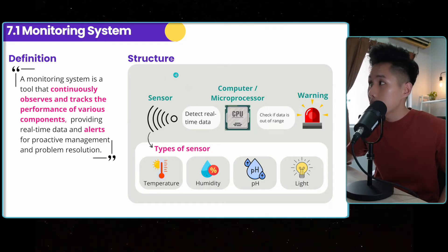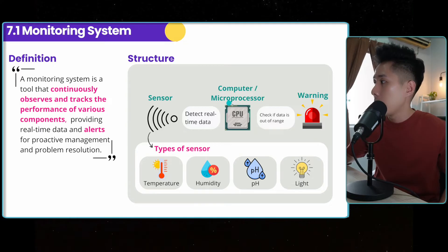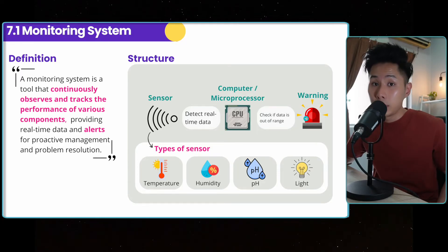And this is the structure of a monitoring system. It consists of sensors. So these are the different types of sensors available. And then the sensor will send data to the microprocessor to pre-process. And if they found an abnormality, this system will send a warning to the user.